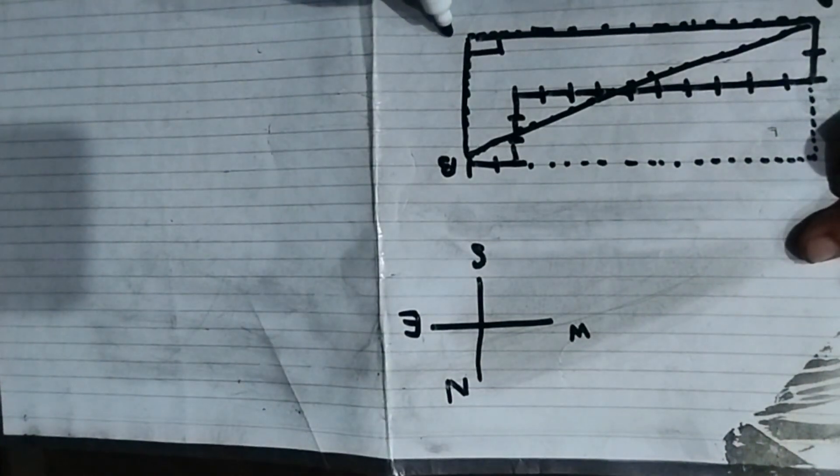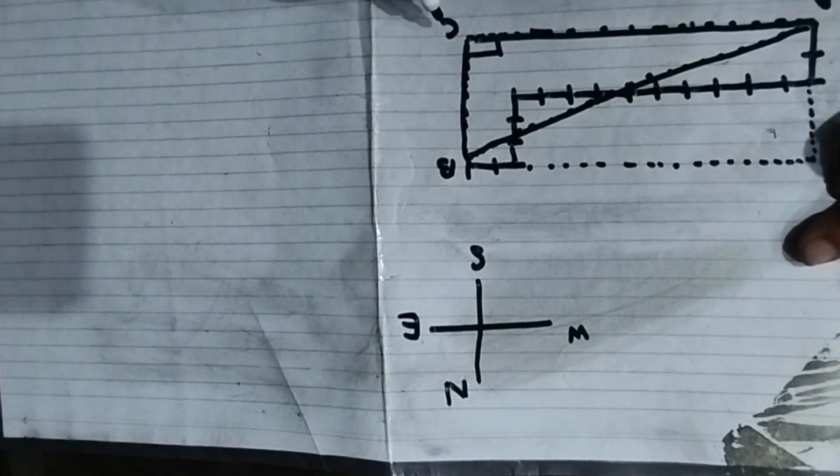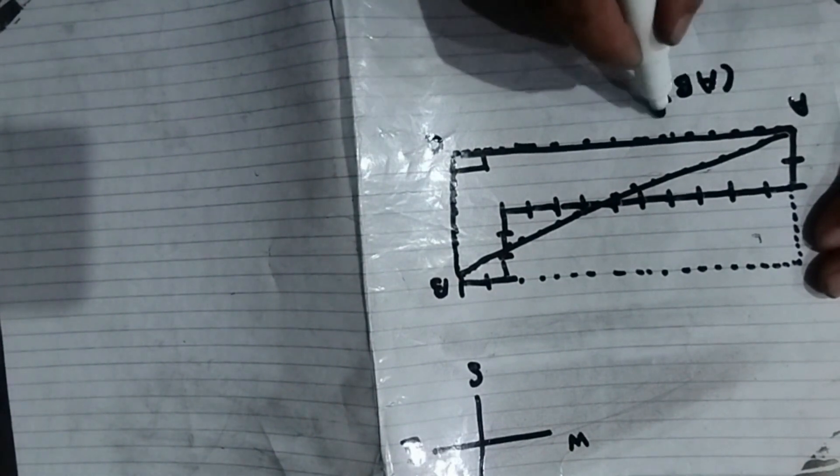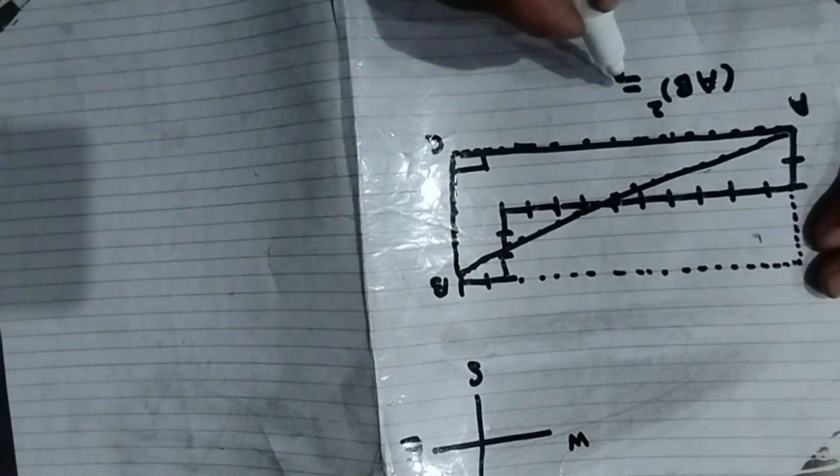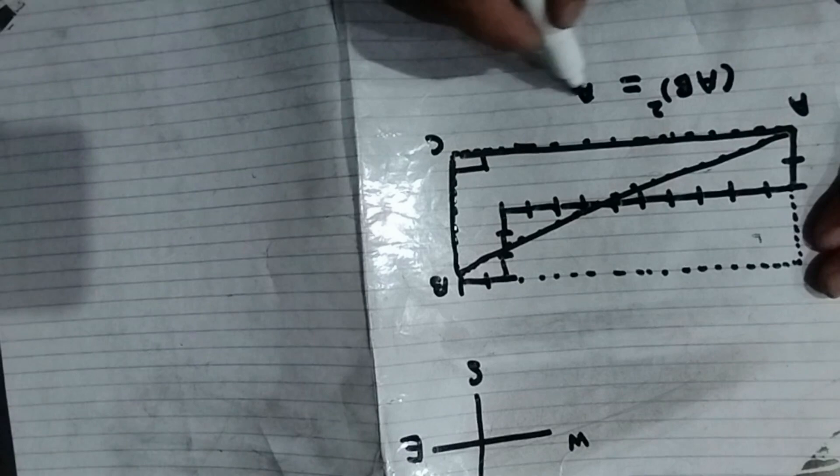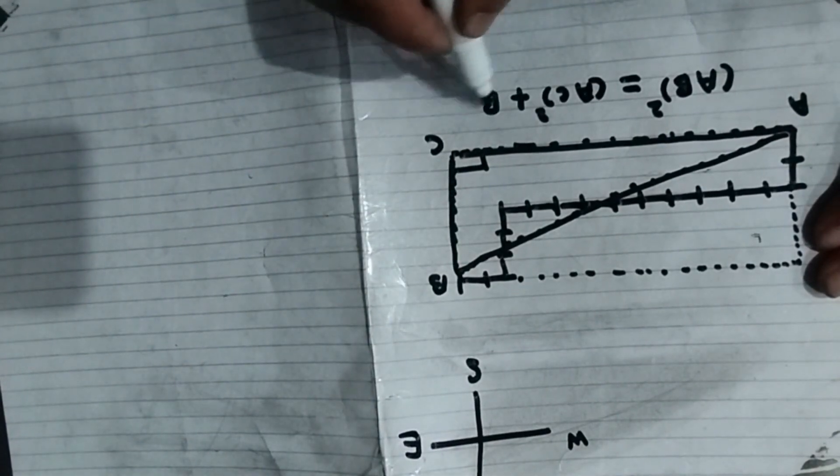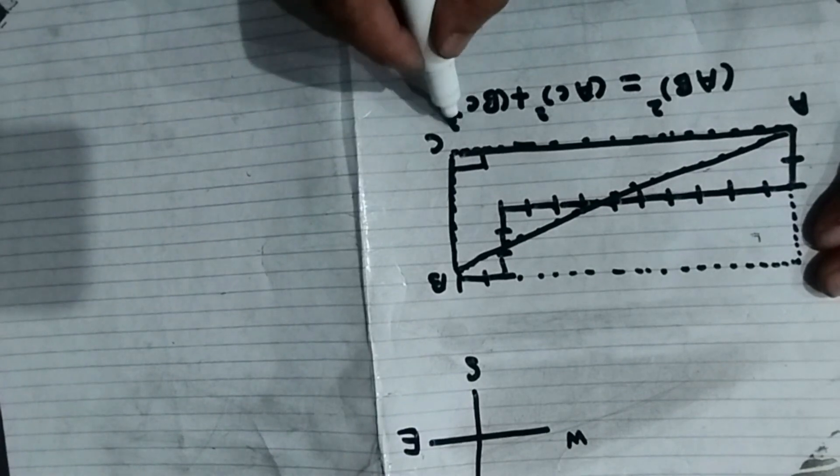We take this point as C then according to Pythagoras theorem AB square is equal to AC square plus BC square.